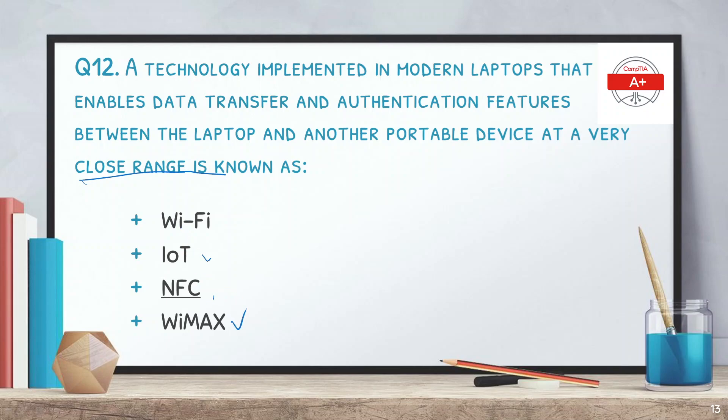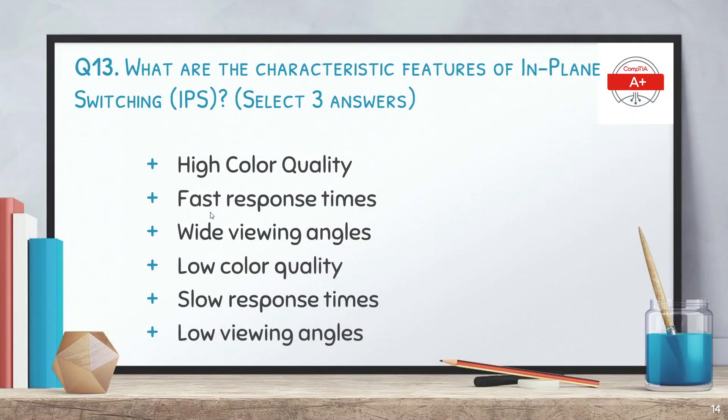The next question asks about the characteristic features of in-plane switching (IPS). Select three options. The options are high color quality, fast response times, wide viewing angles, low color quality, slow response times, and low viewing angles. The answers are high color quality, wide viewing angles, and slow response times.